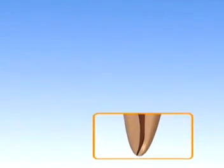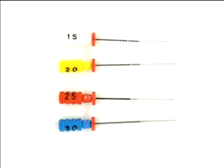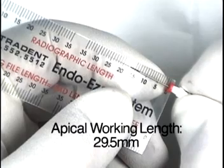The apical three millimeters is cleaned and shaped using the apical files. The apical files only have fluting on the apical 12 millimeters. So when dentin is engaged, it is being engaged apically.